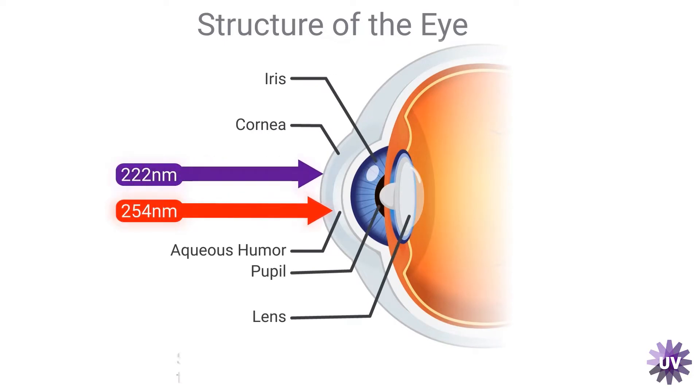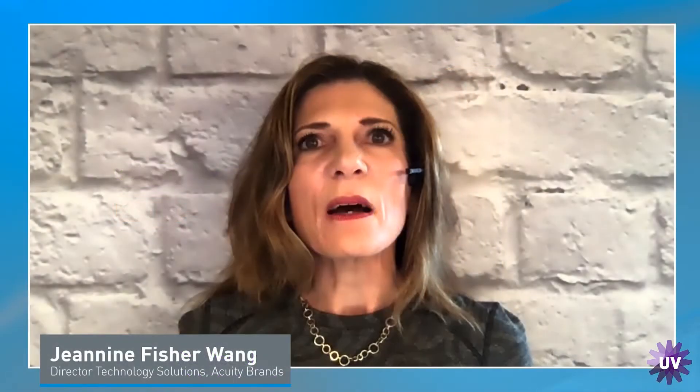This is the fundamental reason why this wavelength doesn't have the same type of potential harm that the more conventional 254 nanometer germicidal UV wavelength does. With far UVC, we are naturally protected from exposure to those wavelengths in the deeper layers of our skin and protected at the cornea.